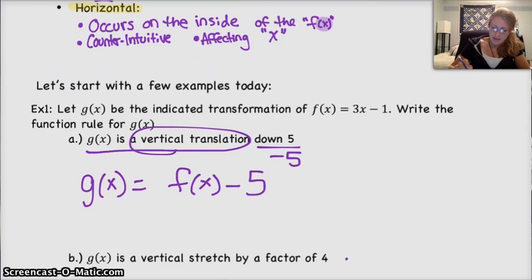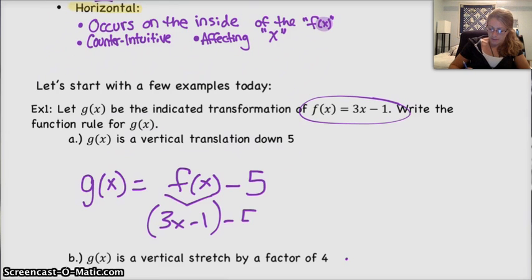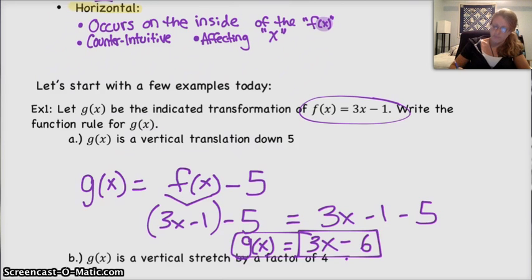So then I can take my f of x, which is 3x minus 1. f of x equals 3x minus 1 from up here. And subtract 5 from it. So simplify that a little bit. 3x minus 1 minus 5. You end up with 3x minus 6. And that is g of x, which is your newly transformed function. Careful with notation and labeling what's g and what's f.